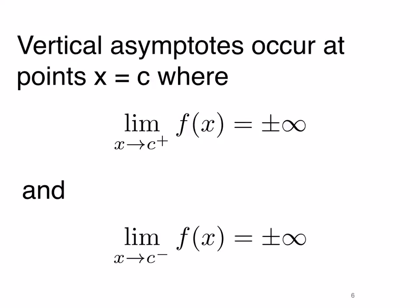Vertical asymptotes will occur at a point x equals c where the limit as x approaches c from the right of f(x) is plus or minus infinity. Remember that vertical asymptotes are lines that cannot be crossed by the graph. So if you have a limit on one side of the asymptote that's plus or minus infinity and another side that's also plus or minus infinity at x equals c, then you'll know that you have a vertical asymptote at x equals c.